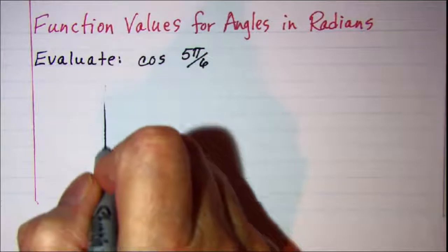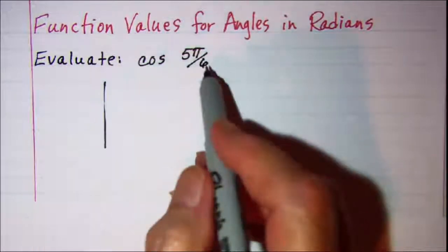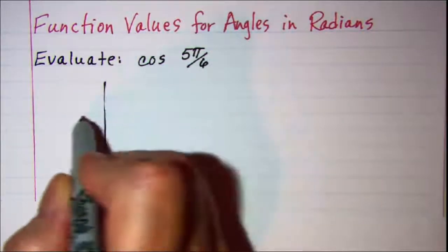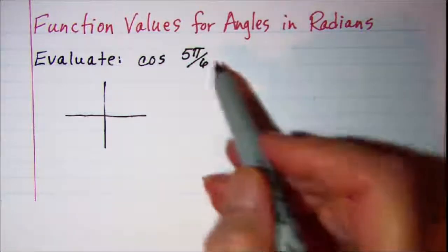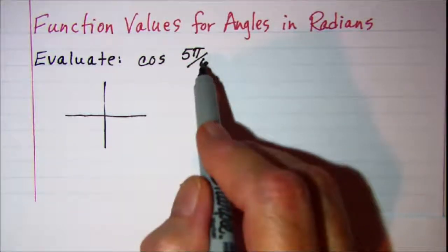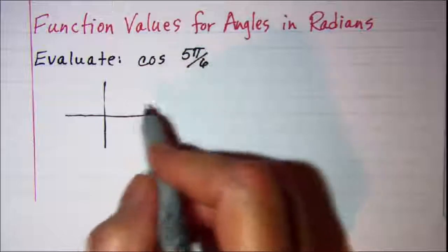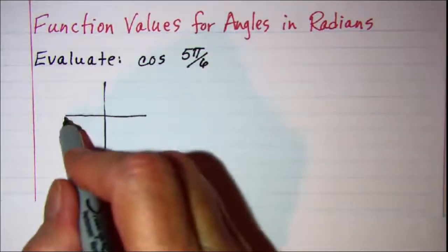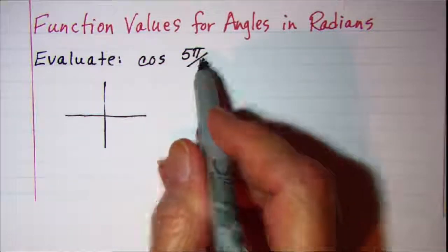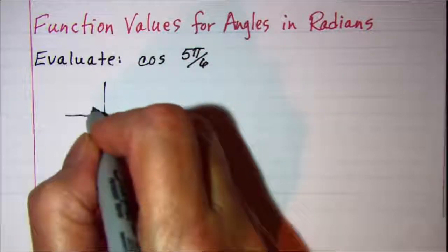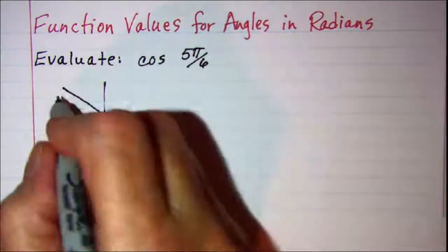Now if you need to you can convert 5 pi over 6 to degrees. I prefer not to do that, I prefer to look at this as 6 pi over 6 is a semicircle. So 5 pi over 6 is in the second quadrant.